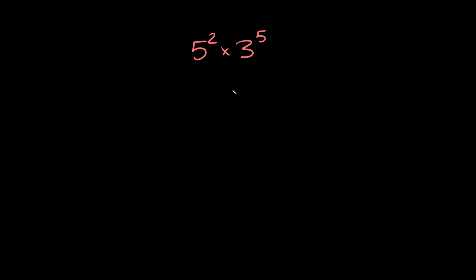In a case like this, you're going to be fine. The way that you can solve these or break these down is you can always break down the bigger exponent to match the smaller exponent. So here we can break down this 5 to match this 2.